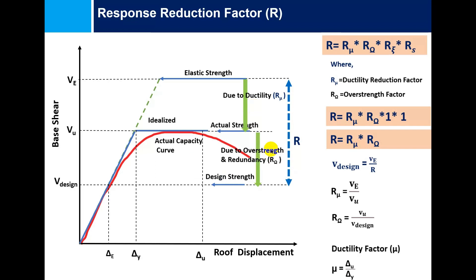Redundancy is the quality of a structure having alternate load paths by which lateral force can be transferred, allowing the structure to remain stable following the failure of a single element. More redundancy leads to increased energy dissipation and strength, serving as a key factor for structural robustness. A structure is considered fully redundant if failure of one component merely changes the boundary or support conditions but doesn't result in collapse.